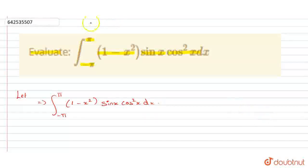Now, we know very well that integral minus a to a f of x dx equal to 2 integral 0 to a f of x dx.